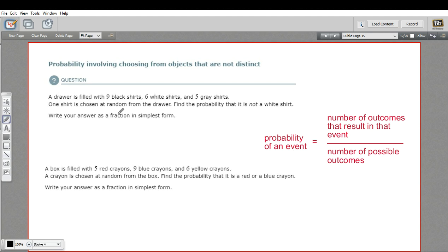Let's see how that works in this first problem. It says a drawer is filled with nine black shirts, six white shirts, and five gray shirts. One shirt is chosen from the drawer. Find the probability that it's not a white shirt.